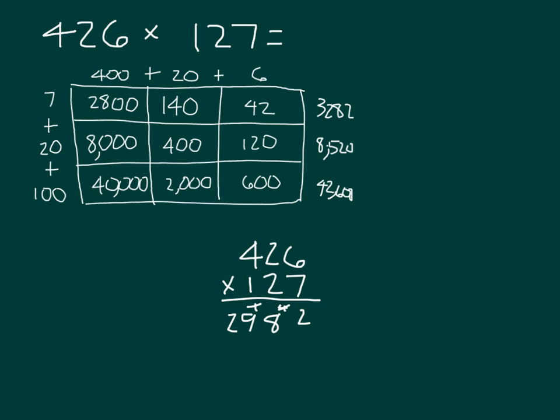We will place a 0, so that we can work the 2 there, which is worth 20, or 2 tens. 2 times 6, which is 12, write 2, regroup 1. 2 times 2, which is 4, plus 1, which is 5. 2 times 4, which is 8. And if we start comparing these, you'll actually notice that we have our partial products right there, 8,520.